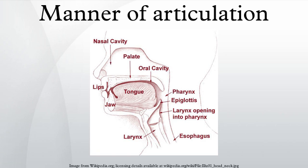Homorganic consonants, which have the same place of articulation, may have different manner of articulation. Often nasality and laterality are included in manner, but some phoneticians, such as Peter Ladefoged, consider them to be independent.